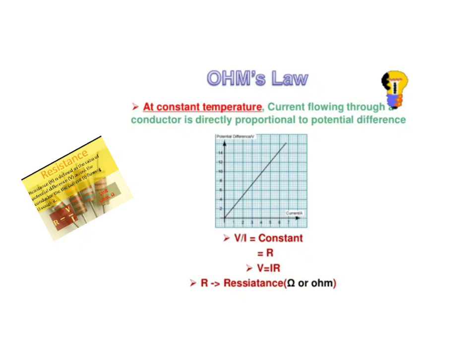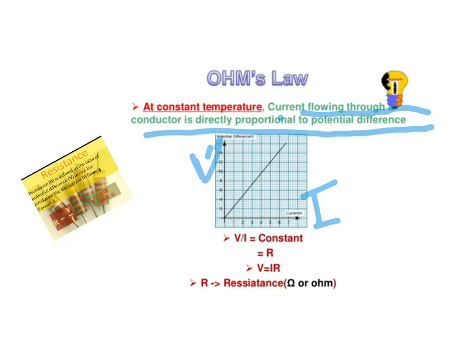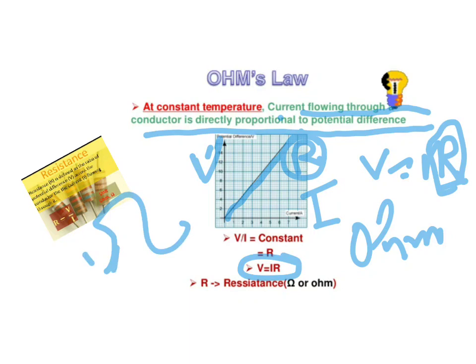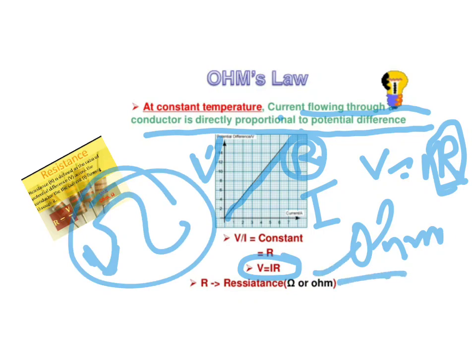At constant temperature and when other physical properties are kept constant, the current flowing through the conductor is directly proportional to the potential difference. Graphically, if voltage is on one axis and current on the other, V = IR, where R is a constant, is shown as a straight line. The SI unit of resistance is ohm, denoted by the symbol Ω.